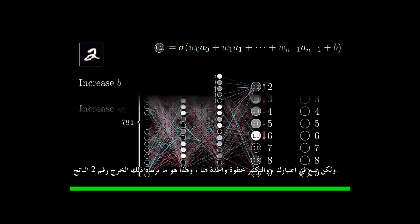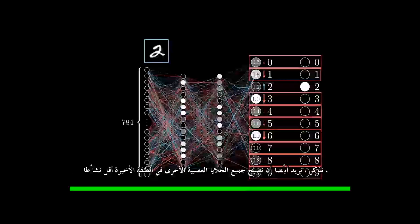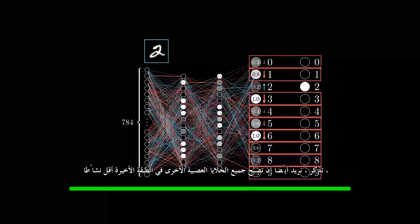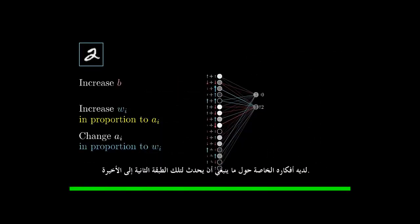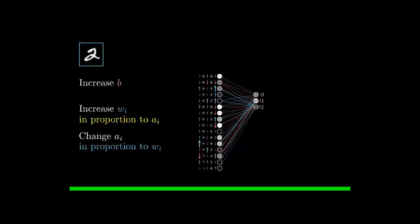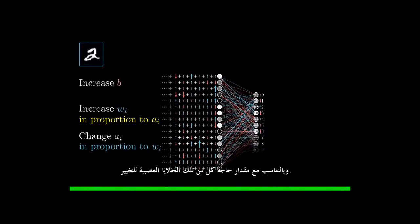But keep in mind, zooming out one step here, this is only what that digit 2 output neuron wants. Remember, we also want all of the other neurons in the last layer to become less active, and each of those other output neurons has its own thoughts about what should happen to that second-to-last layer. So the desire of this digit 2 neuron is added together with the desires of all the other output neurons for what should happen to this second-to-last layer, again in proportion to the corresponding weights, and in proportion to how much each of those neurons needs to change.